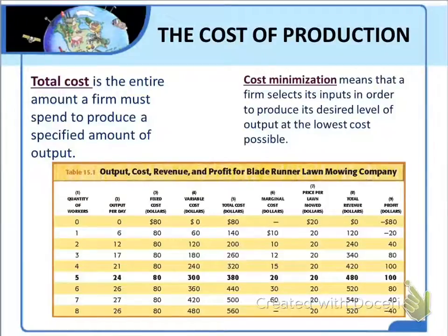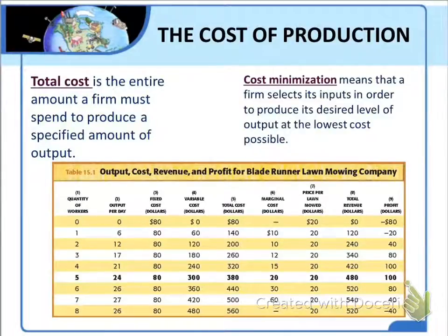Firms that want to earn the highest possible profit will seek the cheapest way to produce a given quantity of output. Otherwise, they would be wasting money that could otherwise contribute to their profit. A firm that selects its inputs in order to produce its desired level of output at the lowest cost possible is called a cost minimizer.